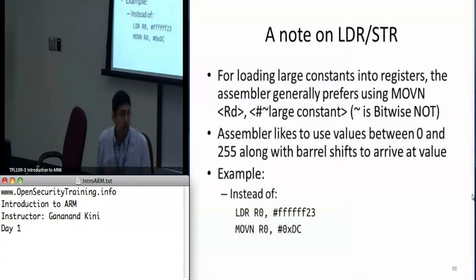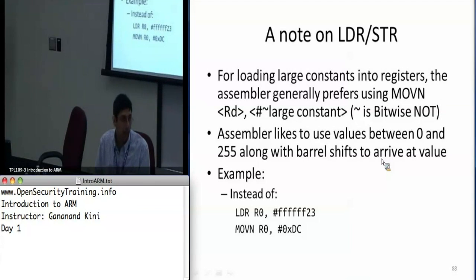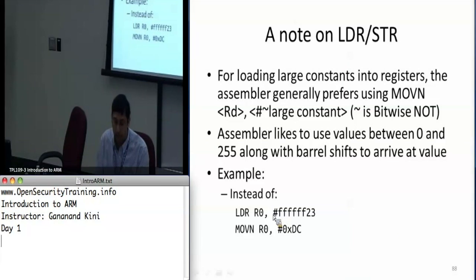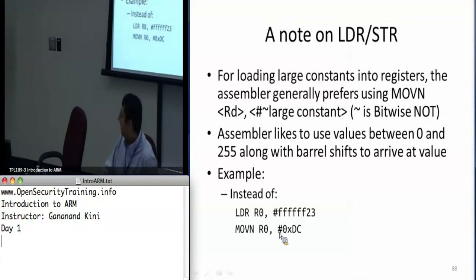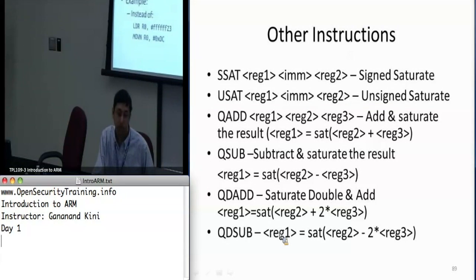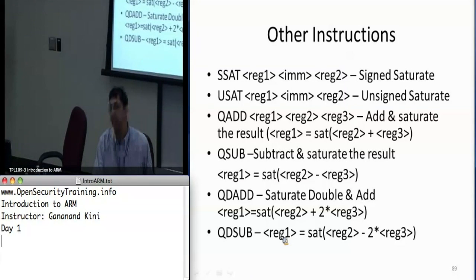For loading constants into registers, especially very large constants, the assembler prefers to use MVN — move negative. So instead of writing LDR R0 with a large number, the assembler has a tendency to choose a move negative. It takes the one's complement and uses that instead, doing MVN of 0xDC and putting that in R0. Don't be surprised when you use some constants in your program and go to the assembly and don't see them — it's just doing the negative.